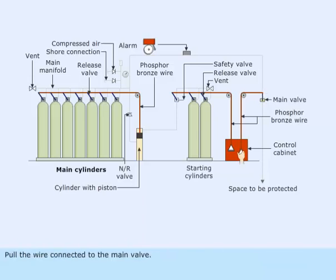Pull the wire connected to the main valve. This opens the valve that connects the main manifold to the machinery spaces.